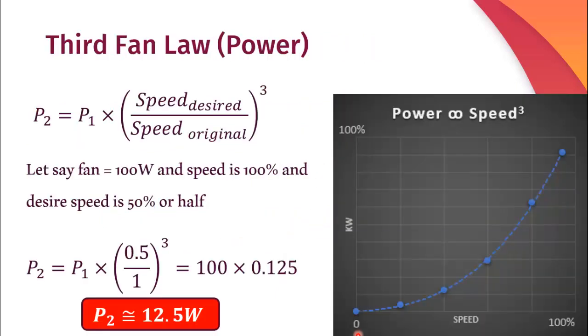Once we know how to control the speed of the fan, now let's come back to our original question, which is whether it can save energy and reduce electricity bill or not. For that, we have to refer to the third fan law, which is also called the power law, in which the power is related with the cube of the speed.